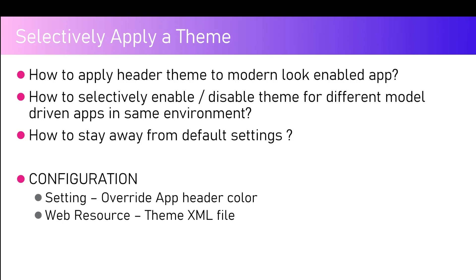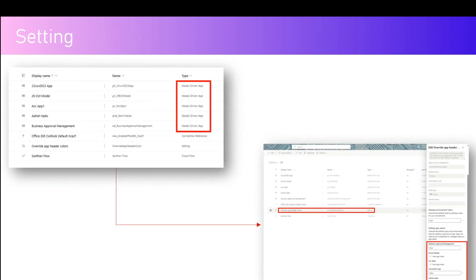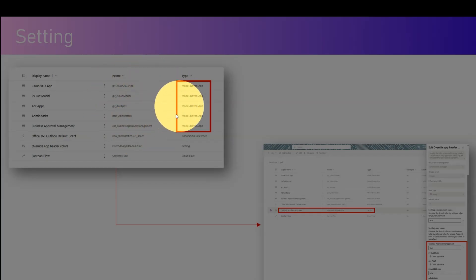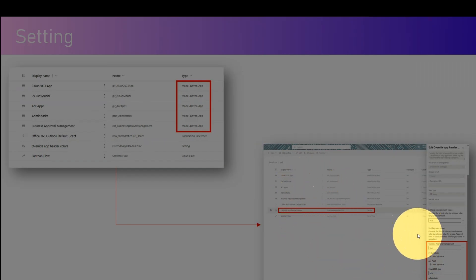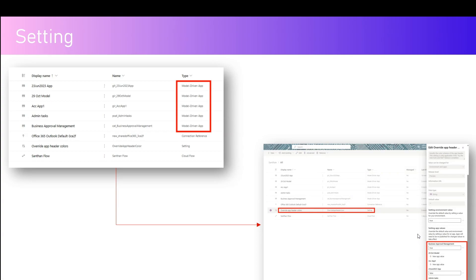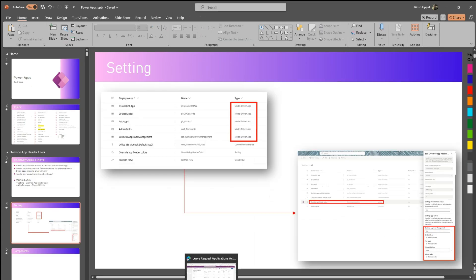This video is all about selective theming. First we are going to check how to apply a header theme to a modern look enabled app, then we will check how to selectively enable or disable the theme for different model-driven apps, and then how to stay away from the default settings. The configuration we are going to look at is: one, a web resource which will house the XML file containing the app header color settings, and two, a setting called override app header color.